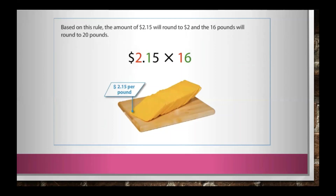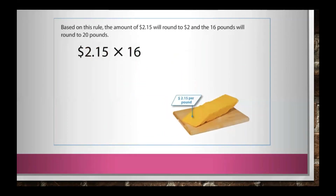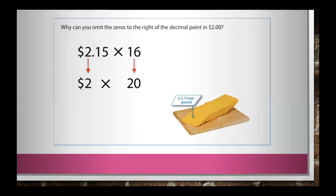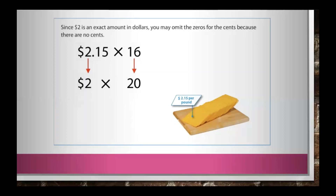Based on this rule, the amount of $2.15 will round to $2.00 and the 16 pounds will round to 20 pounds. Why can you omit the zeros to the right of the decimal point in $2? Since $2.00 is an exact amount in dollars, you may omit the zeros for the cents because there are no cents.